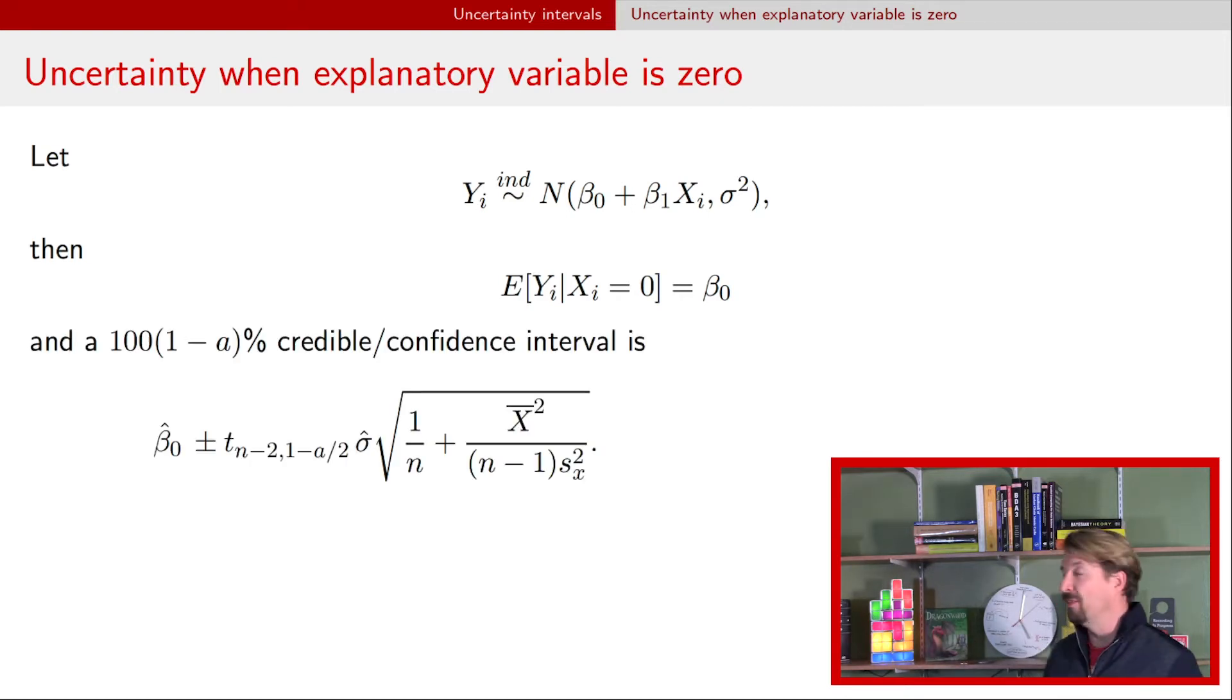We also talked about how to provide an uncertainty estimate for that situation when x is zero. The uncertainty interval that we have is this one. Hat beta naught is our estimate of beta naught from the data. We have this t critical value, we have our estimate for the standard deviation sigma hat, times this square root of one over n plus x bar squared divided by n minus one times the sample standard deviation of the explanatory variable squared. It's appealing because we have both this credible and confidence interval interpretation about what happens when x is zero.